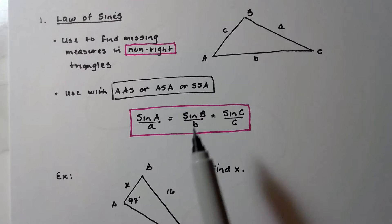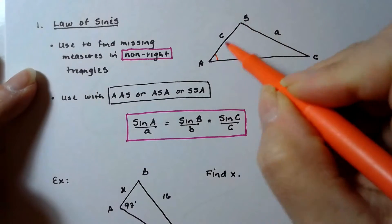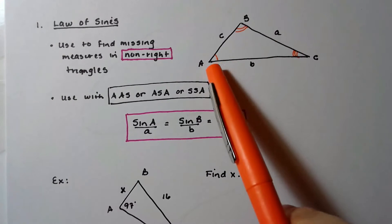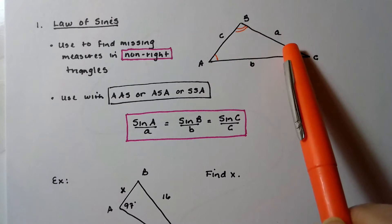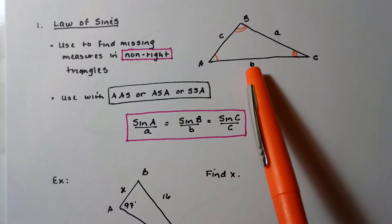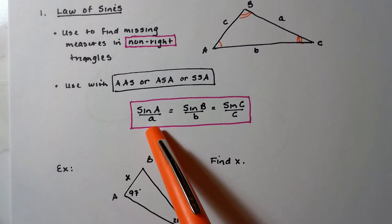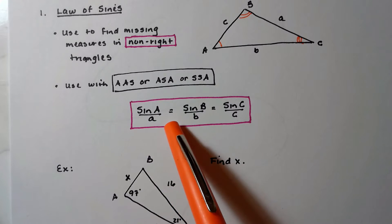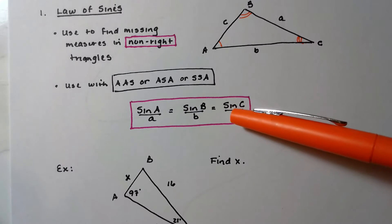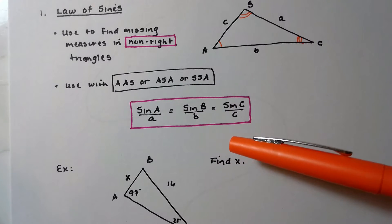The formula goes like this: in our triangle, angle A is here, angle B here, angle C here. The sides opposite those angles are labeled with the same letter in lowercase — side a opposite angle A, side b opposite angle B, side c opposite angle C. The formula says: sine of A over a equals sine of B over b equals sine of C over c. You won't have all three pieces of information — you pick any two combinations, set them equal, and fill in what you know.